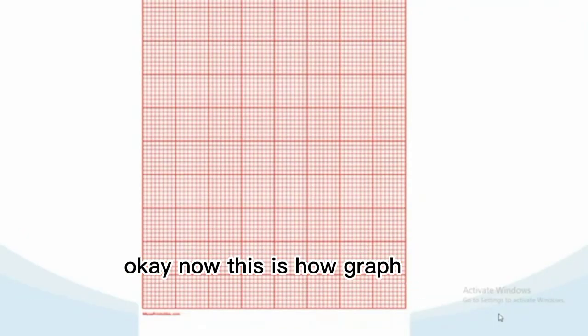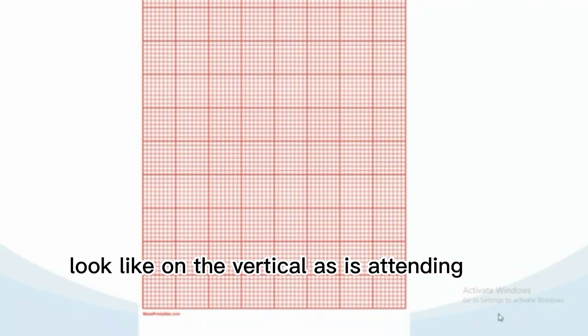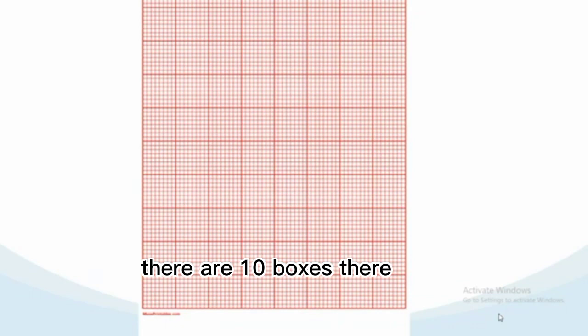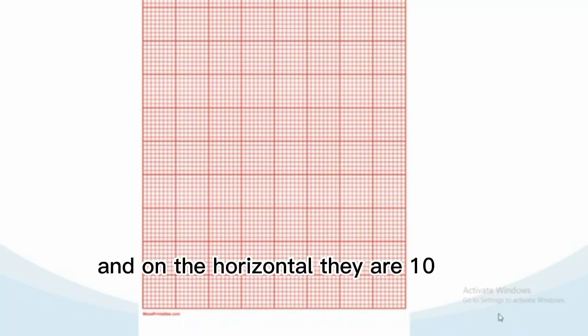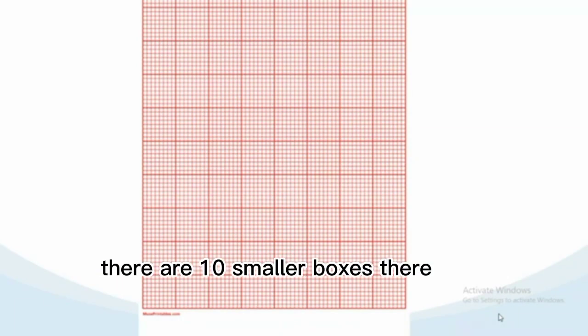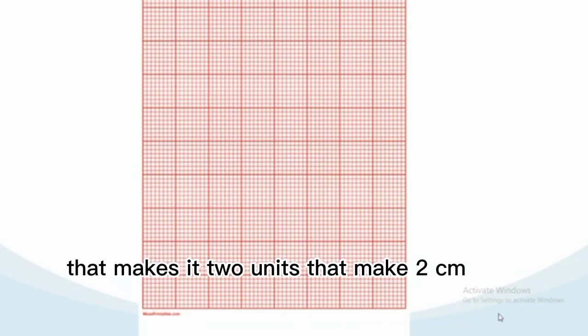Okay, now this is how your graph will look like. On the vertical axis there are 10 boxes, and on the horizontal there are 10. In each box there are 10 smaller boxes. That makes it two units, that's two centimeters. So if I'm having 20 boxes, that's four centimeters for the graph.